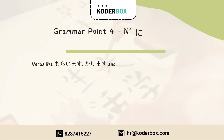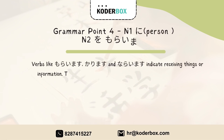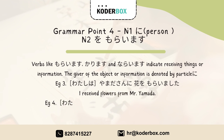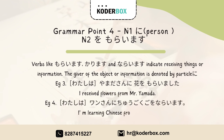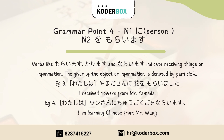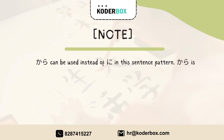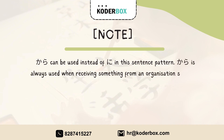Grammar point four: Noun one ni, person two, noun two wo moraimasu. Verbs like moraimasu, kharimasu, and naraimasu indicate receiving things or information. The giver of the object or information is denoted by particle ni. Example: Watashi wa Wan-san ni Chuugokugo wo naraimasu — I'm learning Chinese from Mr. Wang.